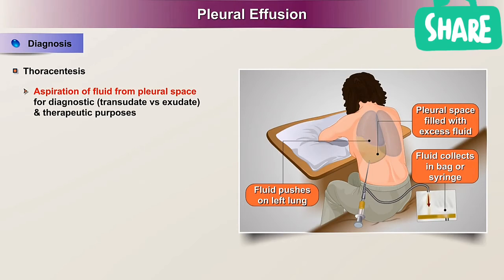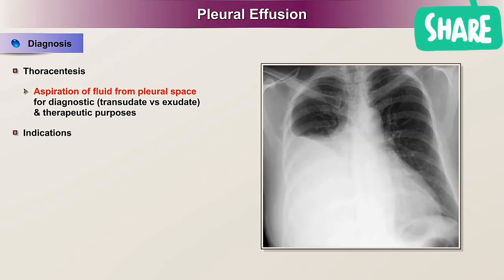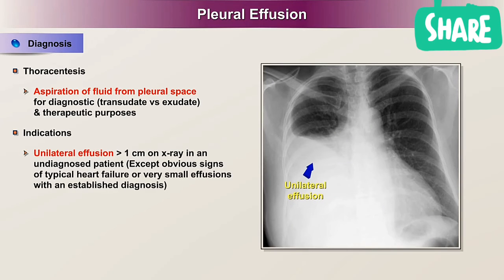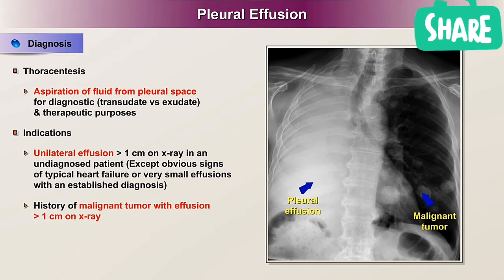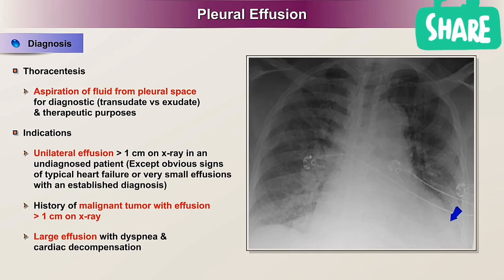Thoracentesis is the aspiration of fluid from the pleural space for diagnostic purposes, e.g., distinguishing transudate versus exudate, and/or for therapeutic purposes. Indications include: any new unilateral effusion of more than 1 cm on X-ray in an undiagnosed patient, except in patients with obvious signs of typical heart failure or very small effusions in patients with an established diagnosis; history of malignant tumor with effusion of more than 1 cm on X-ray; and large effusion with dyspnea and/or cardiac decompensation.